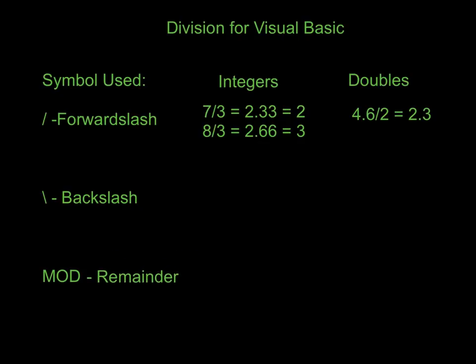The backslash sticks to the true definition of an integer by allowing us to round down no matter what. So if we do 7 backslash 3, it equals 2.33 and still gives us 2. If we have the number 8 and divide by 3, this is now going to do what an integer should do and keep that 2, because we're not up to another whole number yet. So when you're dividing integers, use the backslash.